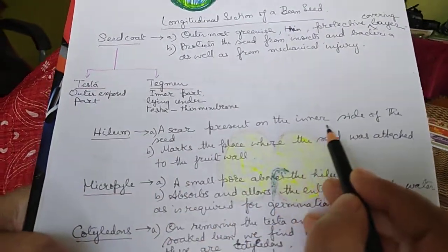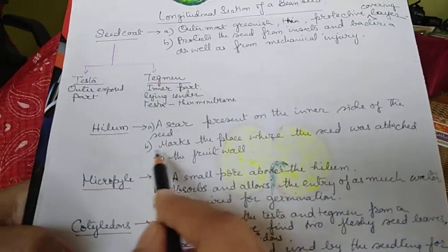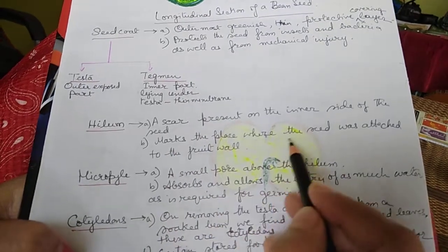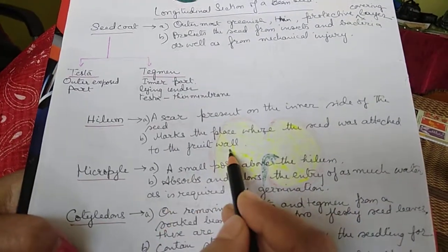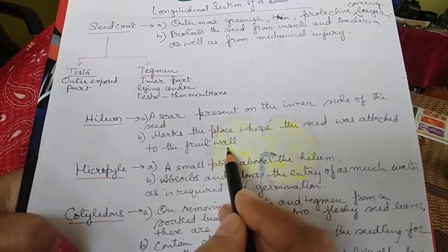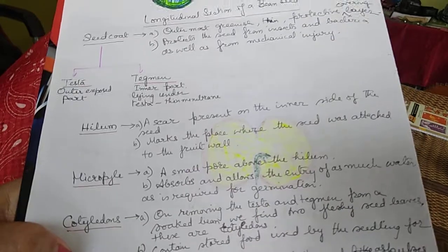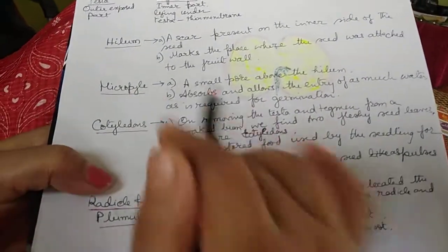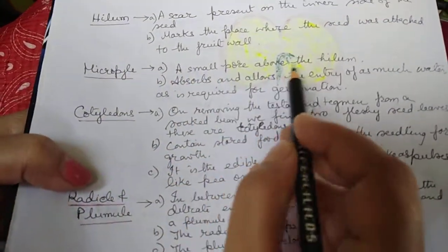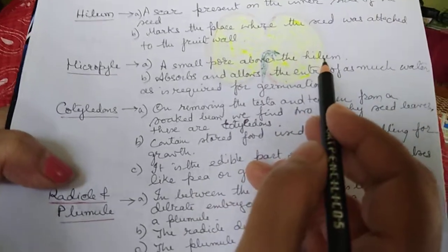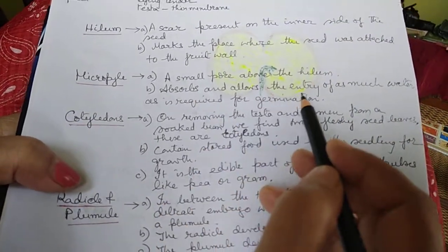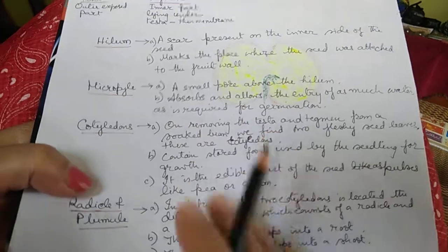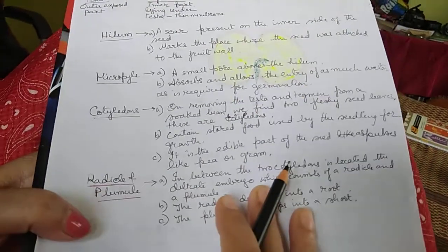The hilum is a scar present at the inner side of the seed; it marks the place where the seed was attached to the fruit wall. The micropyle is a small pore above the hilum — it absorbs and allows entry of water as required for germination.